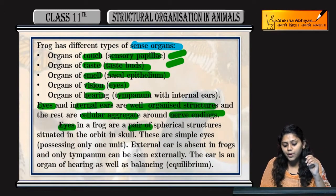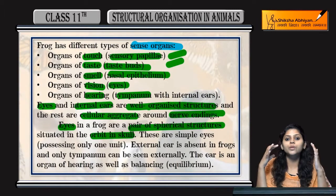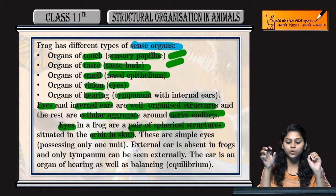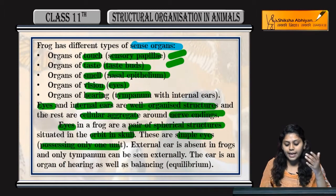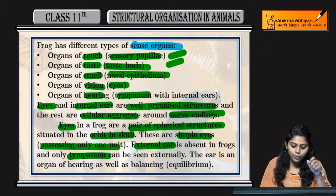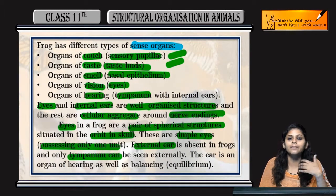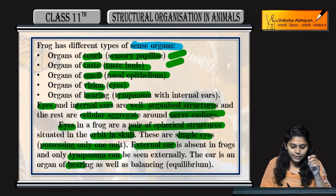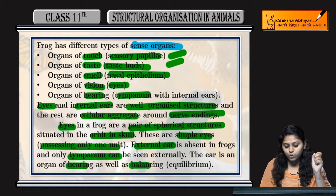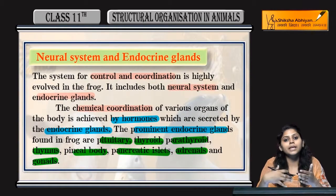Eyes in case of frogs are paired spherical structures, situated in the orbit of skull. These are simple eyes and possess only one unit. External ear absent होता है — only tympanum present होता है, जिसे हम externally देख सकते हैं. कोई भी pinna ear में present नहीं होता है. Tympanum membrane ear की तरह act करती है — यह sound signals को receive करता है hearing purpose के लिए, and it is also used for maintaining equilibrium or balancing. So यह था neural system and endocrine system of frog.